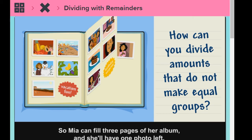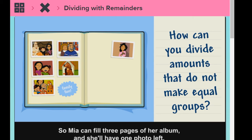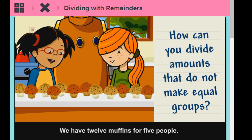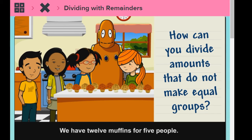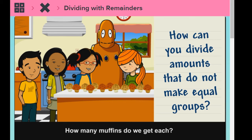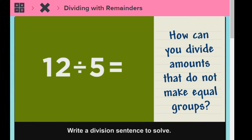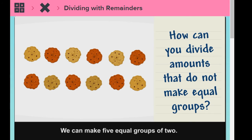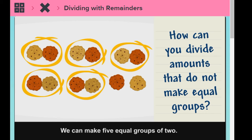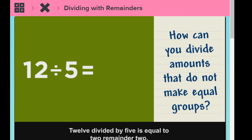So Mia can fill three pages of her album, and she'll have one photo left. We have 12 muffins for five people. How many muffins do we get each? How many are left over? Write a division sentence to solve. We can make five equal groups of two. There are two muffins left over. 12 divided by five is equal to two, remainder two.